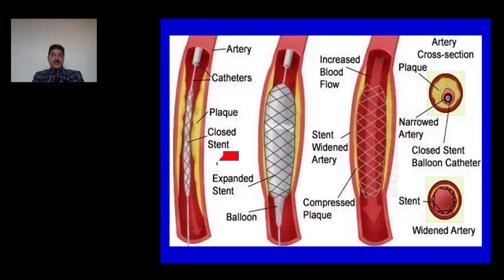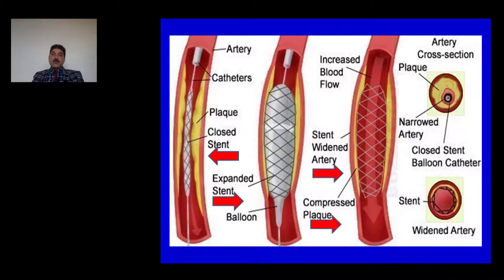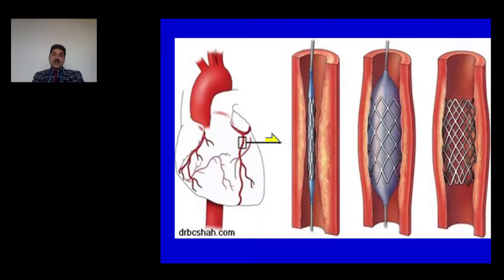As shown in this diagram, a closed stent is placed inside the blocked coronary artery. The balloon is opened, the plaque is compressed, and the lumen of the vessel and blood flow distal to the obstruction is restored. Also shown in this diagram is involvement of the left anterior descending coronary artery due to obstruction — a stent is placed inside and the balloon is inflated.